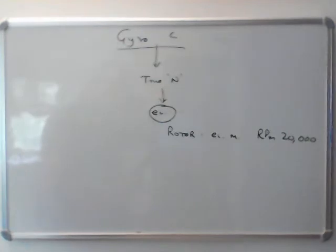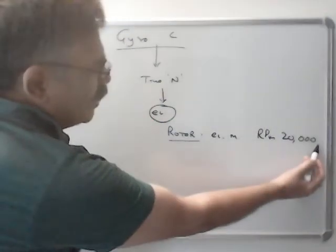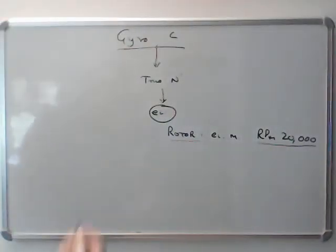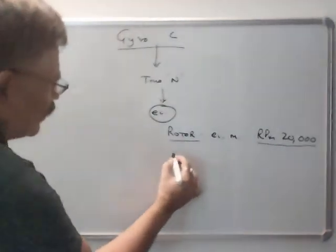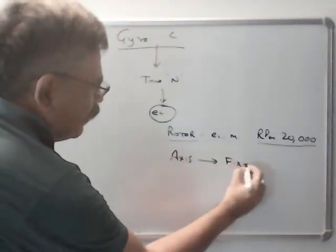Any rotor which has got a high RPM of about 20,000 has got one property that its axis will point towards a fixed object in space.